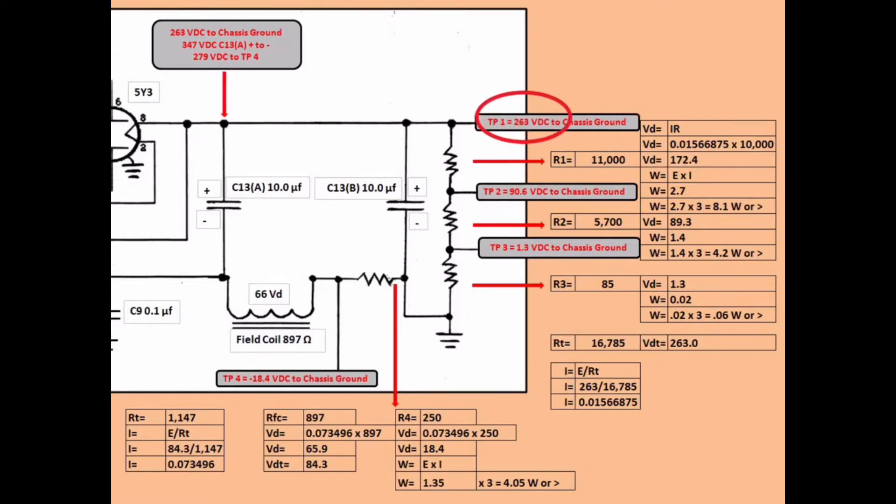We'll reference back to Ohm's Law again. We'll calculate the voltage drop by taking the known current times the resistance itself. I'm going to replace the candohm resistor with a 10k resistor instead of 11k. It gives us a voltage drop when I multiply the current times the resistance of 172.4 volts. Knowing our source is 263, 263 minus the 172.4 equals 90.6 volts.